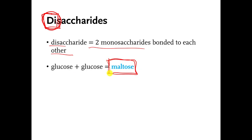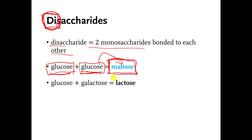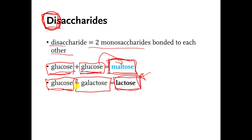The way that you make maltose is you take two glucose molecules — glucose is a monosaccharide — and you connect them together. You make that disaccharide if you connect them in a certain way; if you connect them in another way, you might make a different disaccharide. Lactose — you might have heard of people who are lactose intolerant. Lactose is a disaccharide made by taking a glucose molecule and connecting it to another monosaccharide called galactose.